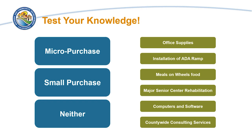Now, let's test your knowledge. Match each procurement method in the left column with one of the desired goods or services in the right column. The answers are provided on the next slide.